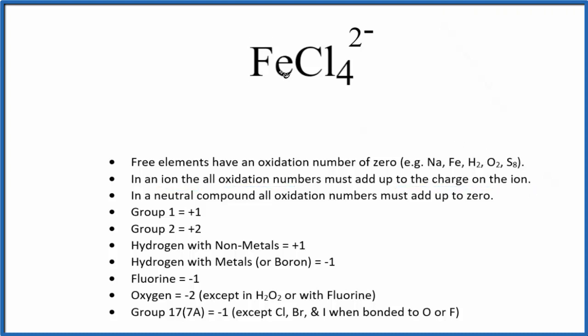Iron, that's a transition metal. It can have different oxidation numbers depending on what it's bonded to. So we don't know what iron is, but we do know that chlorine, that's in group 17, sometimes called 7a. It's almost always negative 1. There are a few exceptions, like when it's bonded to oxygen or fluorine. But the chlorine here, since it's bonded to iron, that's going to be negative 1. So we don't know the iron, we know the chlorine.